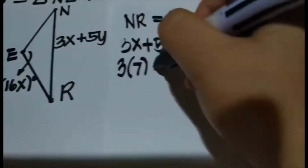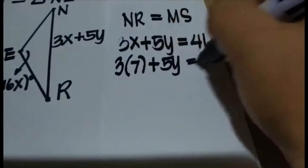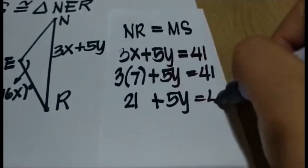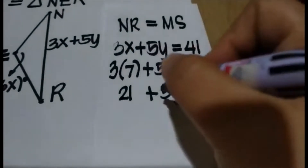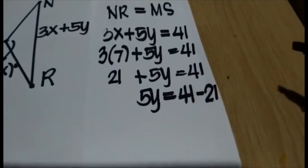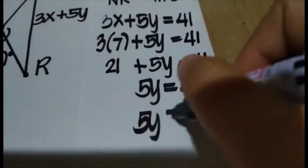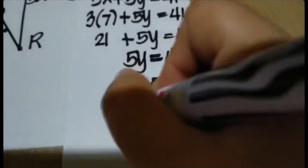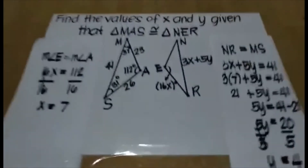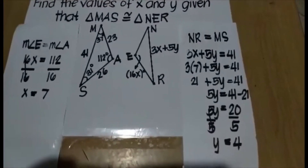Since we have the value of X, we will substitute X with 7. Then 3 times 7 plus 5Y equals 41. 3 times 7 is 21, so 21 plus 5Y equals 41. By the subtraction property of equality, 5Y equals 41 minus 21. Using the division property of equality, we divide both sides by 5. That gives us Y equals 4. So the value of X is 7 and the value of Y is 4.